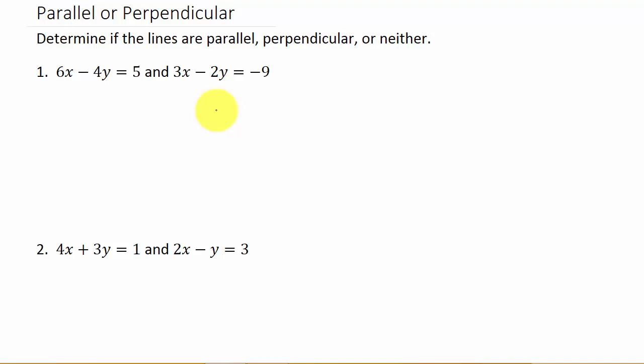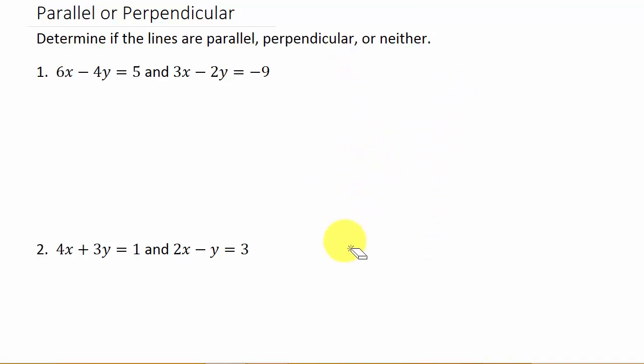To determine if they're parallel or perpendicular — and if they're not one of those, then they're neither — we have to know the slope of the line. If two lines are parallel, that means their slopes are the same. If two lines are perpendicular, their slopes are negative reciprocals of each other. For example, if one line has a slope of two-thirds, then negative three-halves would be the slope of the perpendicular line. Or if it was a slope of negative five, then one-fifth would be the slope of the perpendicular line. And if the slopes are not negative reciprocals, or they're not the same, then they're neither.